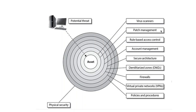The next layer is rule-based access control. You have to give access based on rules and provide the least access individuals need — not more than that. Then there is account management, where you have to manage accounts properly.